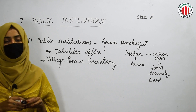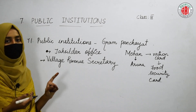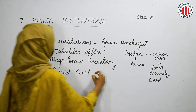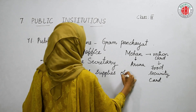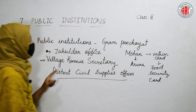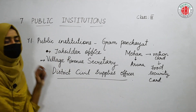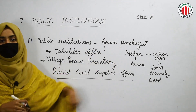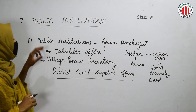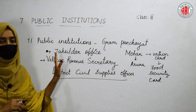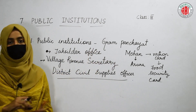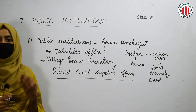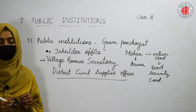The Village Revenue Secretary asked Mohan to wait for some days to get his ration card. He then sent the application to the District Civil Supplies office. The District Civil Supplies office checked all the details related to Mohan and made the ration card. The ration card was sent back to the Village Revenue Secretary, and Mohan received his food security card.